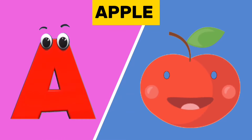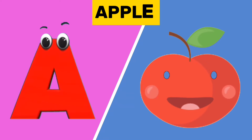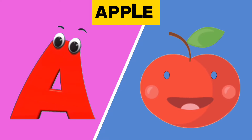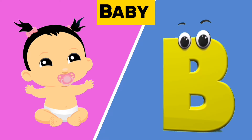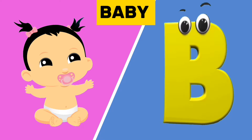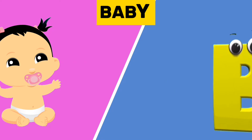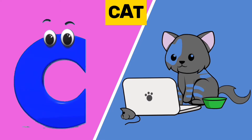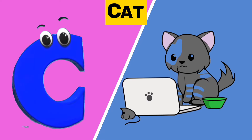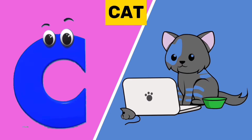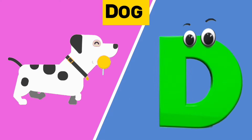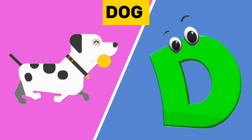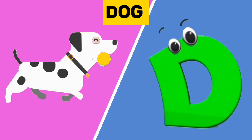A is for apple. A, a, apple. B is for baby. B, b, baby. C is for cat. C, c, cat. D is for dog. D, d, dog.